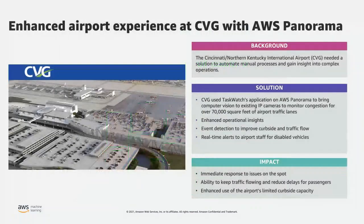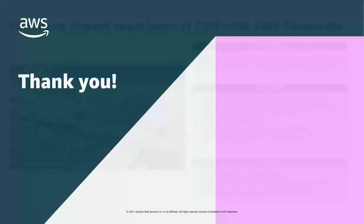I have another use case — for the sake of time I'll be brief. This one is about the Port of Cincinnati, tracking cars stopping in the load and unload area in front of the airport, helping monitor people spending more time than they should and improving traffic flow. This has been a very quick, general overview of what Panorama does and what it can enable. Happy to answer any questions you might have.